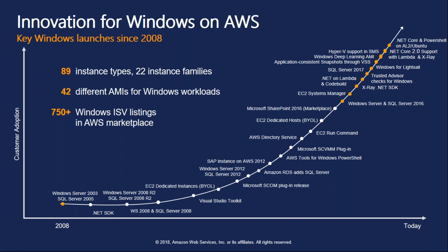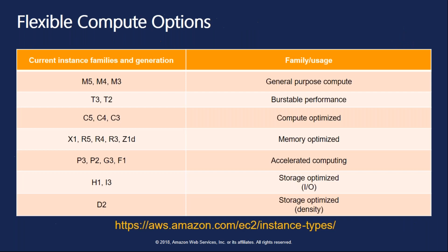There have been many Windows-specific improvements on AWS. .NET Core 2.0 support was available last year, and .NET 2.1 became GA in May and was available and supported on AWS Lambda and CodeBuild by June. Whether you're running legacy Windows Server 2003 workloads or cutting-edge .NET Core applications, or building machine learning algorithms on the Windows Deep Learning AMI, the full spectrum is well supported on AWS.